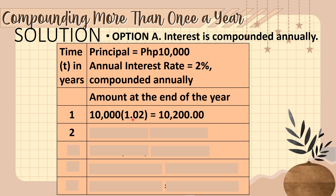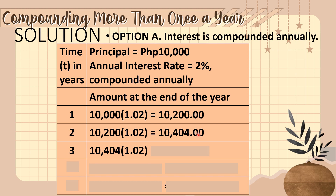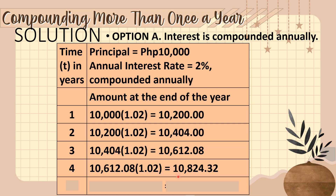In the second year, 10,200 times 1.02 becomes 10,404 pesos. In the third year, 10,404 times 1.02 yields 10,612.08. In the fourth year, 10,612.08 times 1.02 becomes 10,824.32. And on the final fifth year, 10,824.32 times 1.02 becomes 11,040.81.